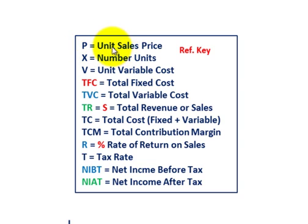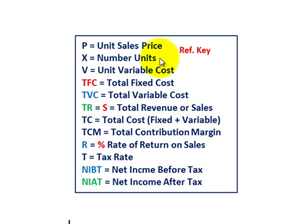P equals the unit sales price — that's the individual price on a per-unit basis. We're solving for a single product here. X equals the number of units we're going to be solving for. V equals the unit variable cost, again based on one unit.